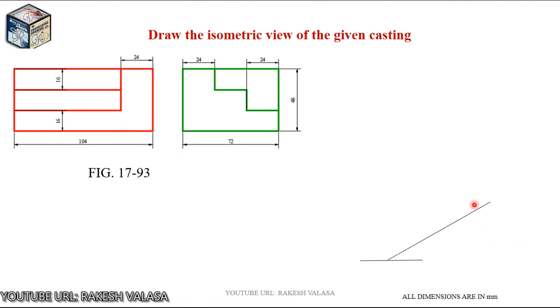Here, this cuboid, this two sides that means length and width makes 30 degrees with ground. 30 degrees. This is the total length that is 104 mm. This is the total width. Next, this edge also makes 30 degrees with horizontal line. This width is 72 mm.